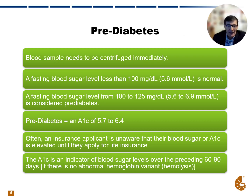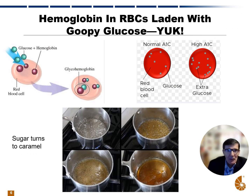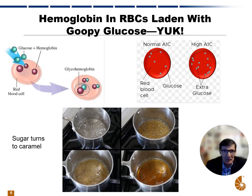If you ever happen to see a super low A1c, it may be because there's a hemoglobin variant. So what happens with hemoglobin, RBCs, and glucose in the body? A typical red blood cell has hemoglobin in it, and that hemoglobin attaches to glucose to form glycohemoglobin. Normally the A1c is in the normal range because there's not that much glucose to bind to the hemoglobin, but a high A1c reflects that there's extra glucose in the system.